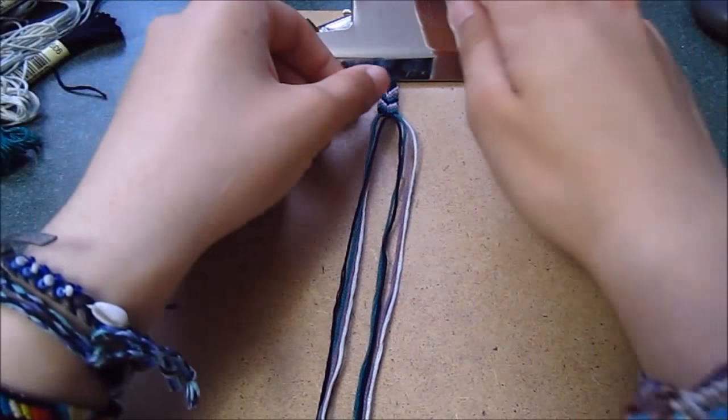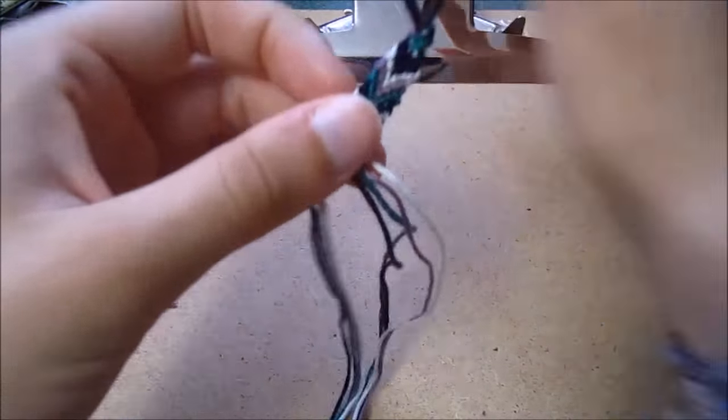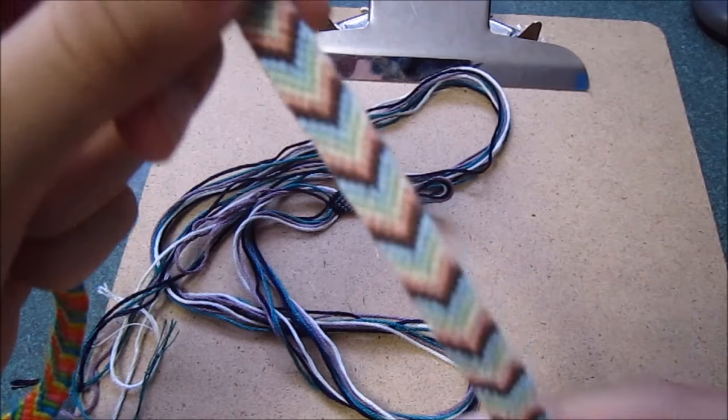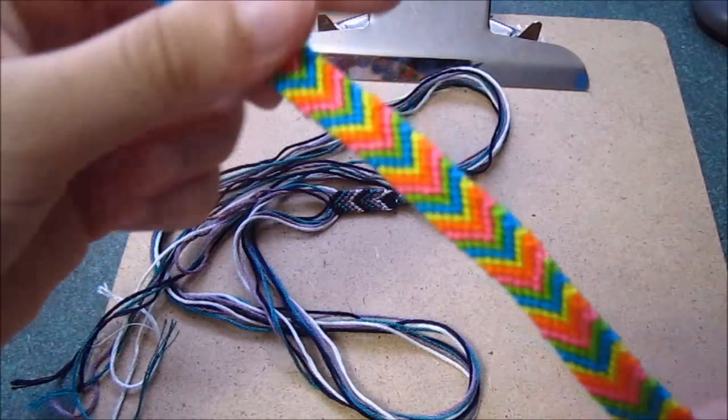When you get to the end, you can tie off your bracelet or you can braid the ends in order to make them easier to tie on. So these are some examples of bracelets that were made with five strings rather than four.